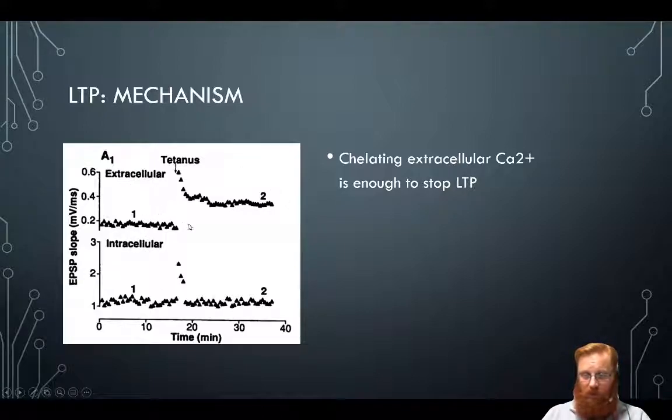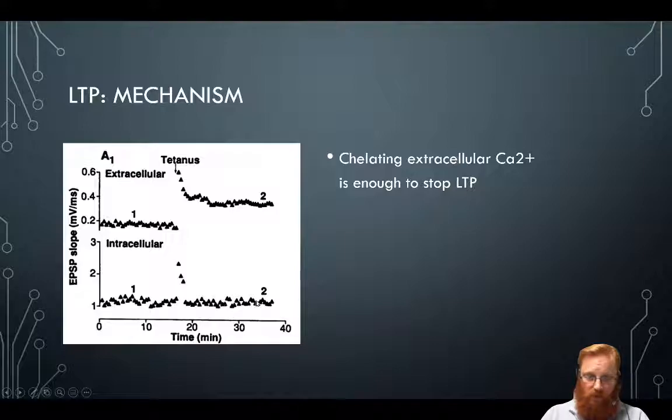We see that this blocks LTP in much the same way. They've got an extracellular electrode. They apply the tetanus, the high-frequency stimulus, and the extracellular electrode sees nice, strong LTP. So for most cells, their synapses got enhanced. But in the intracellular cell, where they could record the actual EPSP, and they could put in enough calcium buffer to chelate all the calcium, they didn't see any LTP. So the EPSP didn't get bigger.